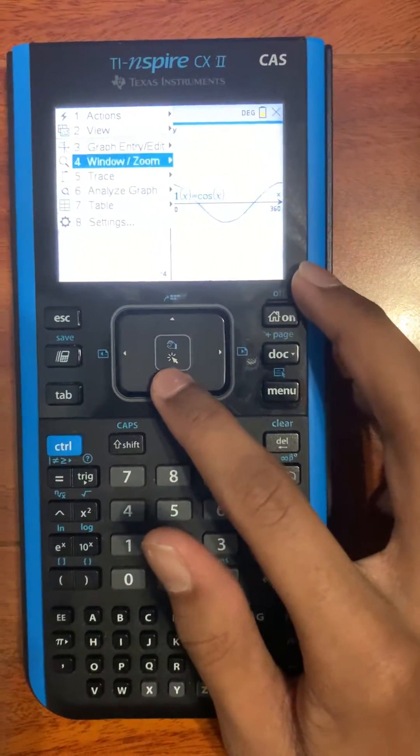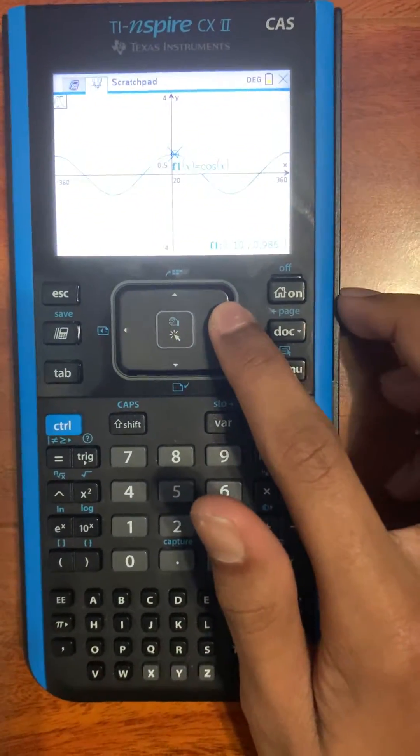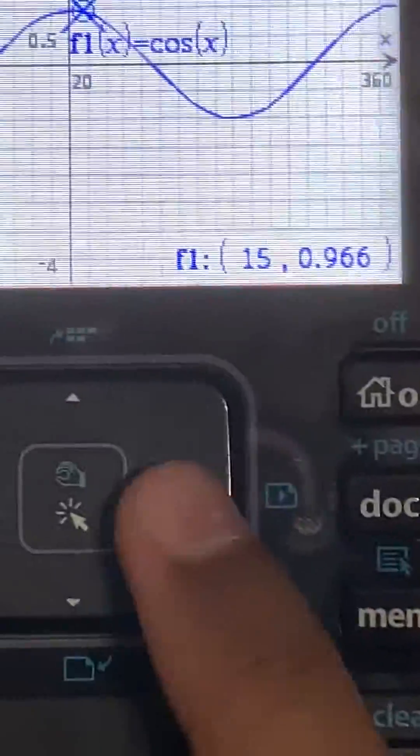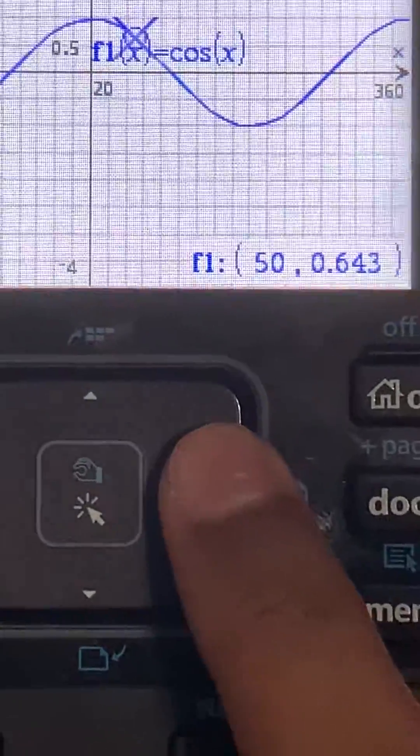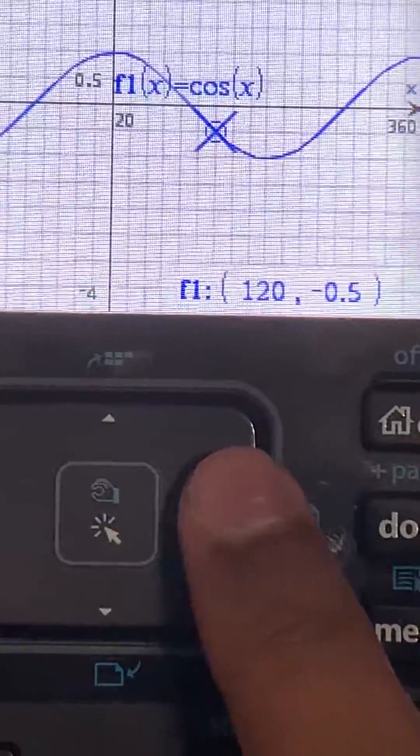Here you can go to trace and trace the graph and look at the function. Analyze the function. It helps to look at all of the values as your x values increase or decrease.